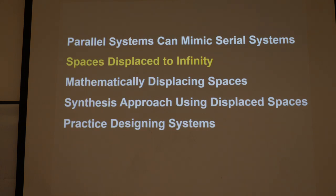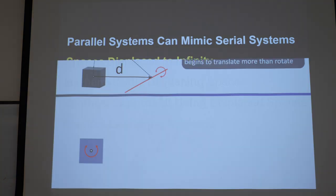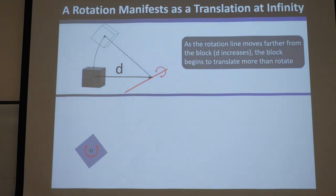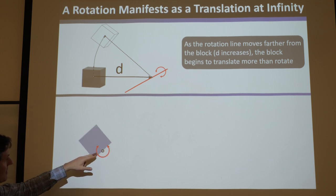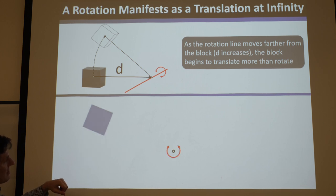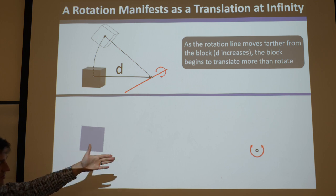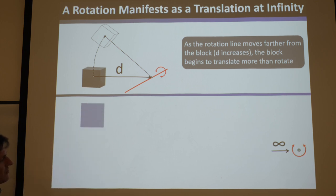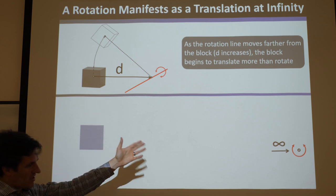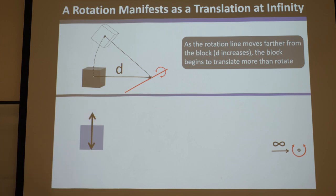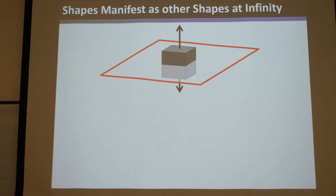Let's look at displacing spaces to infinity to understand what spaces mimic other spaces as they're displaced far away. Say you've got a block here, there's a rotation some distance D away, and this guy will rotate like that. Here it's like a pure rotation — you move it, it's rotating there. You'll see the further the rotation gets from the actual body or point of interest, the less it manifests as a rotation even though it's a pure rotation, and the more it starts manifesting as a translation. At every point in finite space it's not a translation — it's a pure rotation just far away. But once it reaches infinity, it is a pure translation.